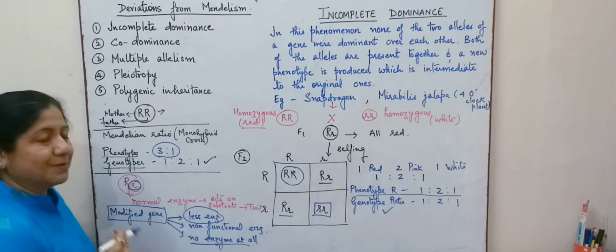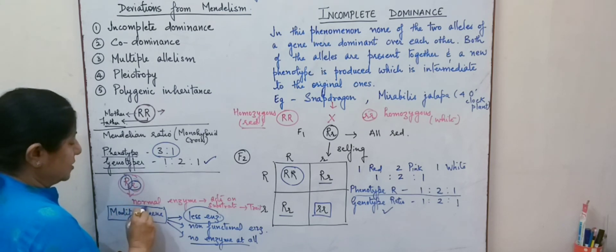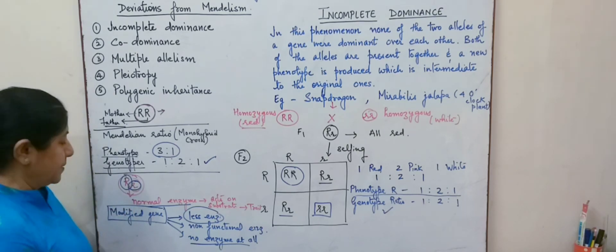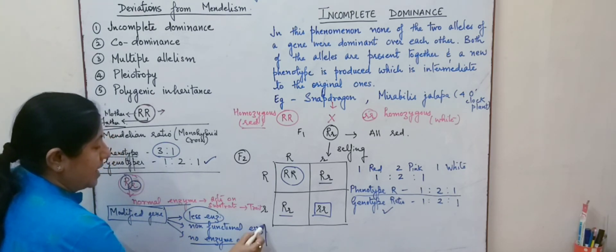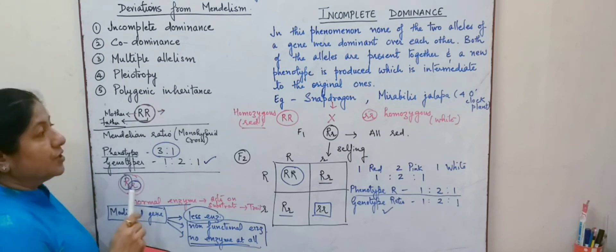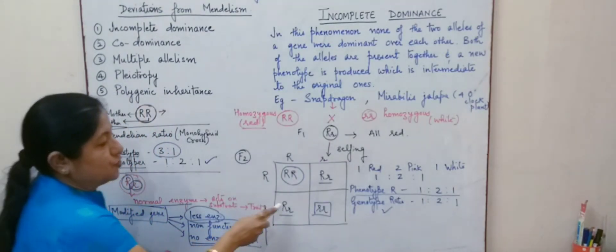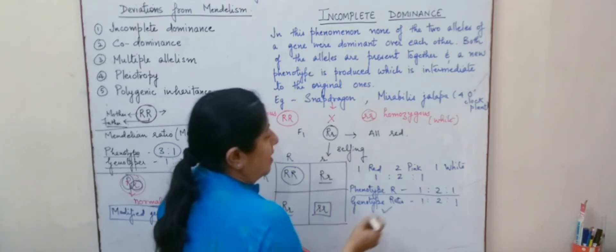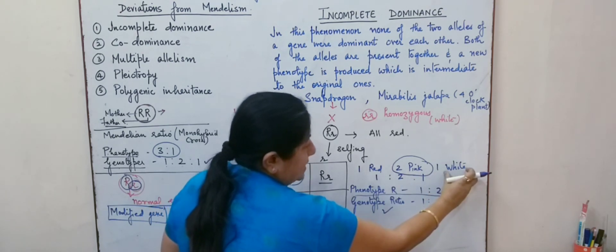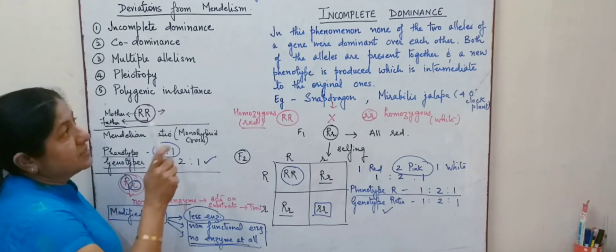In the first situation, the modified gene produces less enzyme but the other allele produces normal enzyme — in such a case there is no change in the phenotype. But if the modified gene produces non-functional enzyme or no enzyme at all, it results in the production of a different phenotype. Here, both genes are expressing and neither is dominant over the other, and therefore we are getting pink colored flowers. Red is not able to completely express itself and white is not able to completely express itself, giving us pink colored flowers. This is incomplete dominance.